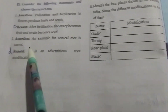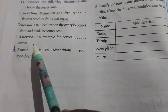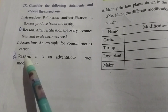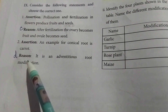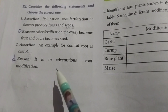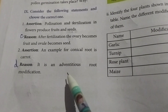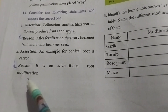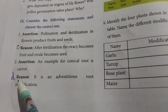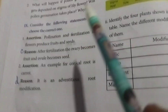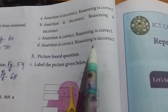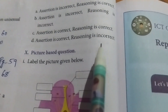Second one — Assertion: An example for a conical root is carrot. Reason: It is an adventitious root modification. Answer: Option D — Assertion is correct, Reason is incorrect.